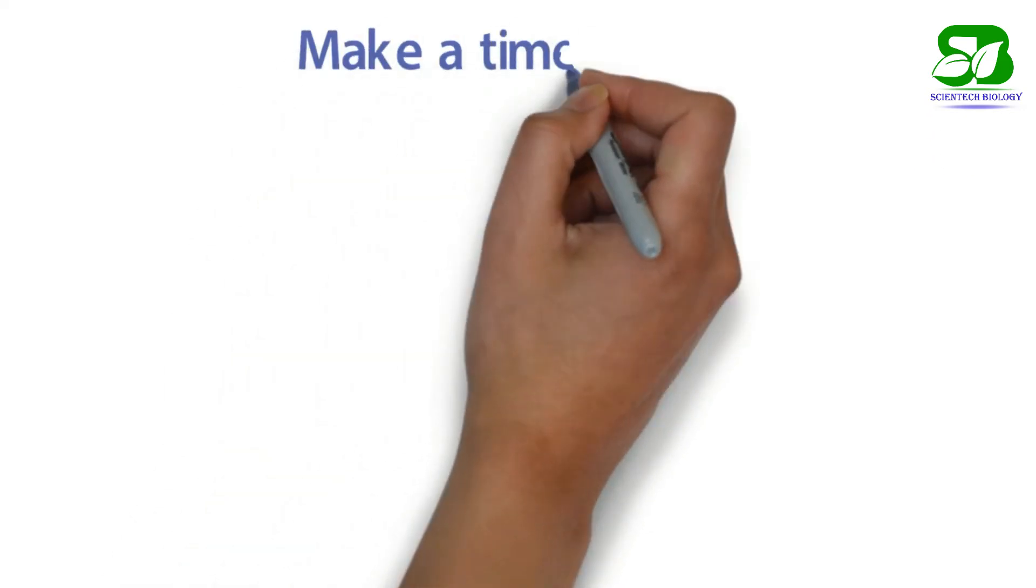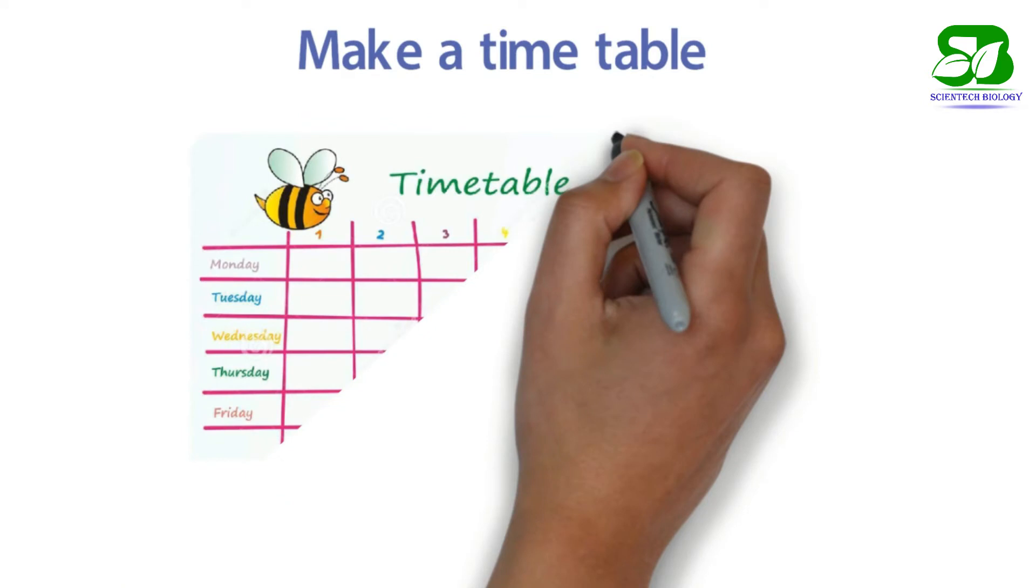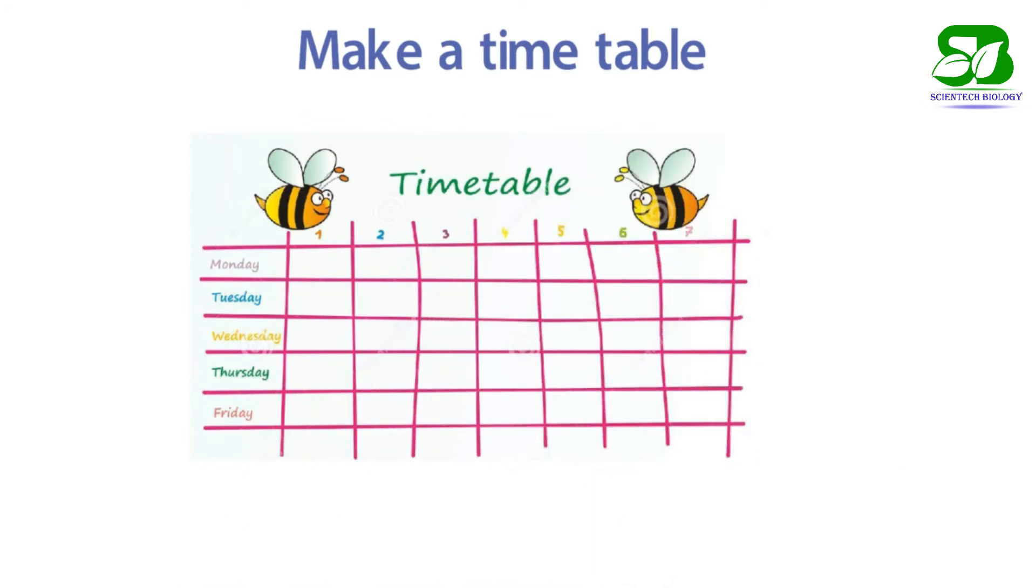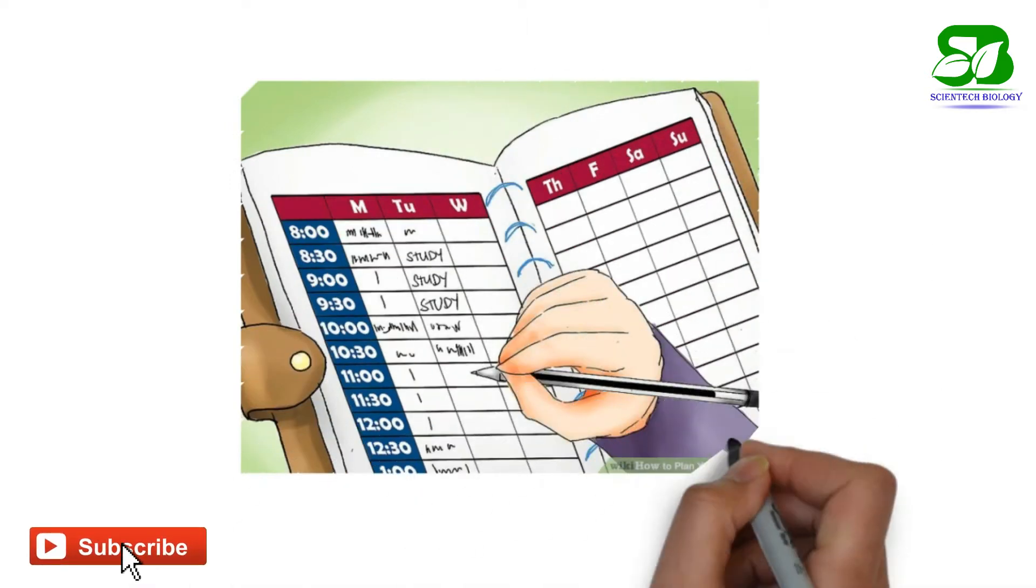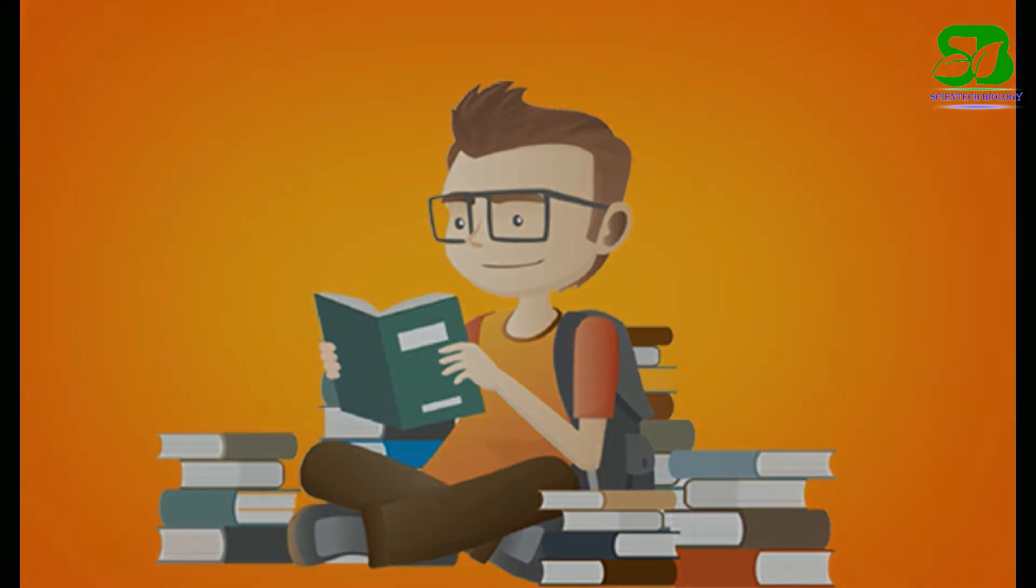Make a timetable. Make a plan for study. Aim to work for 30 to 60 minutes with 5 to 10 minute breaks in between. Try to switch subjects every hour so as to prevent yourself from getting bored.